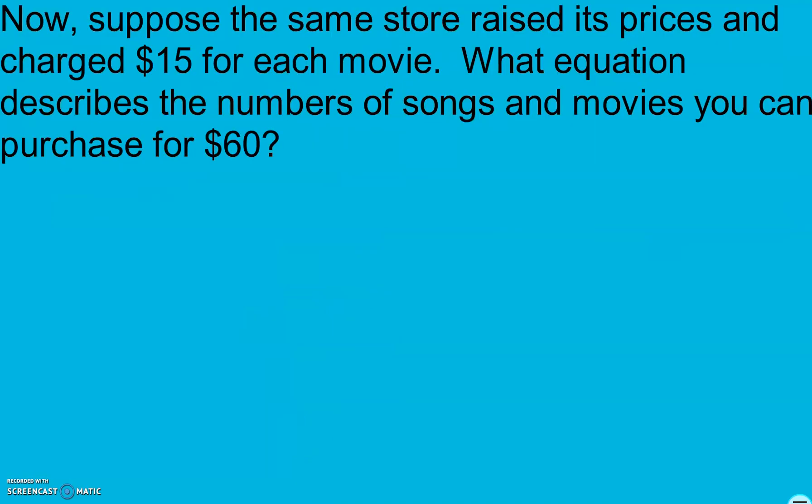Now, give this a try. Suppose the same store raises its prices and charges $15 for each movie. What equation describes the number of songs and movies you can purchase for $60. So, here I'm still looking for my number of songs and my number of movies. So, the amount of money that I spend on songs and the amount of money that I spend on movies has to equal $60. Because we're talking in terms of price here, I need the price. It says it's $15 for each movie. So, my price for movies is 15 times my number of movies. And my price for song is still $1. That didn't change from the last example. So, here I get S plus 15M equals 60.